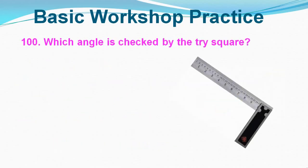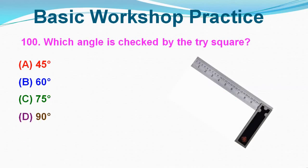Question No. 100: Which angle is checked by the tri square? Option A: 45 degrees, Option B: 60 degrees, Option C: 75 degrees, Option D: 90 degrees. Correct answer is Option D, 90 degrees.